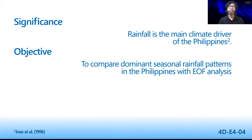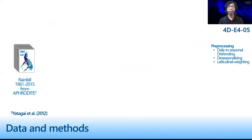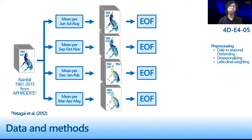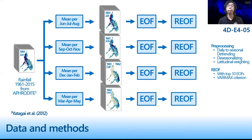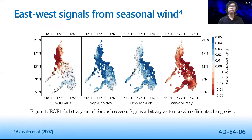As rainfall is the main climate driver of the Philippines, we compared the dominant seasonal rainfall patterns from EOF, where we expected the variants to show more realistic patterns. We performed EOFs for each 3-month season based on the local southwest and northeast monsoons. We then applied REOF to the top 10 EOFs per season, and for EEOF, we stacked the seasons in a yearly cycle prior to the standard EOF.